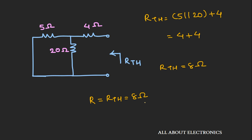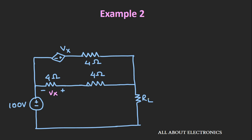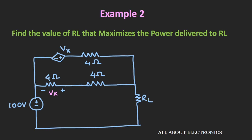Now let's see the second example based on this maximum power transfer theorem. In this circuit, we have been asked to find the value of load resistance RL for which the maximum amount of power will get delivered to it. As we already know, maximum power is delivered when RL equals the Thevenin's equivalent resistance. In this circuit, we have both independent and dependent sources. When a circuit contains independent as well as dependent sources, the Thevenin's equivalent resistance is given as Vth divided by Isc.